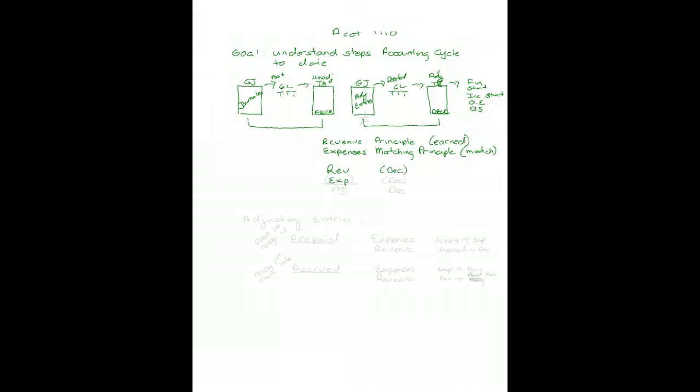The matching principle says match the expenses against the period the revenue was generated, or passage of time. It's hard to say rent causes revenue, but it is matched against time. So that ends up with revenue being for a period of time — in our case, December — and expenses being for a period of time — in our case, December — so that we had net income for December based on the accrual basis of accounting.